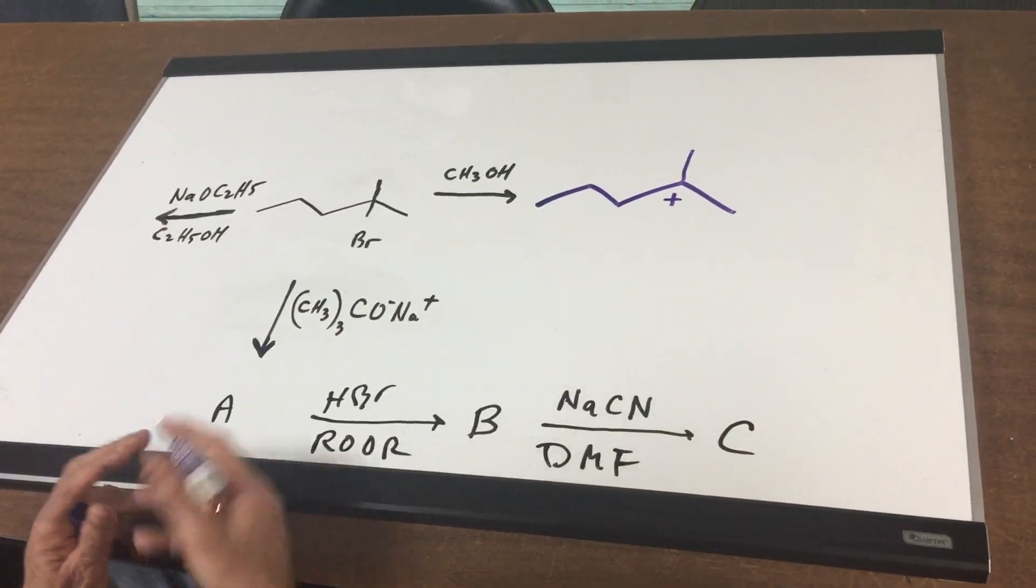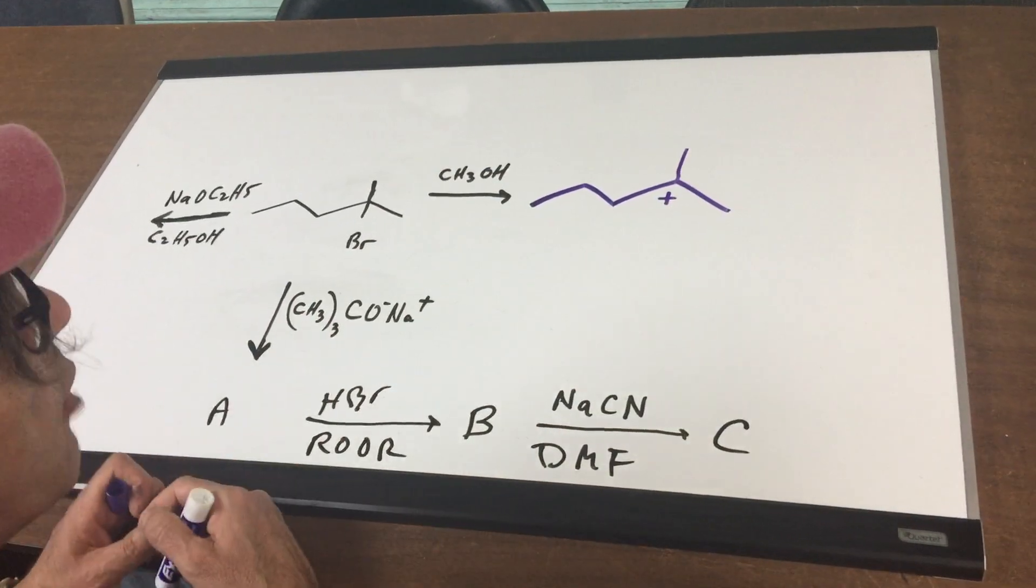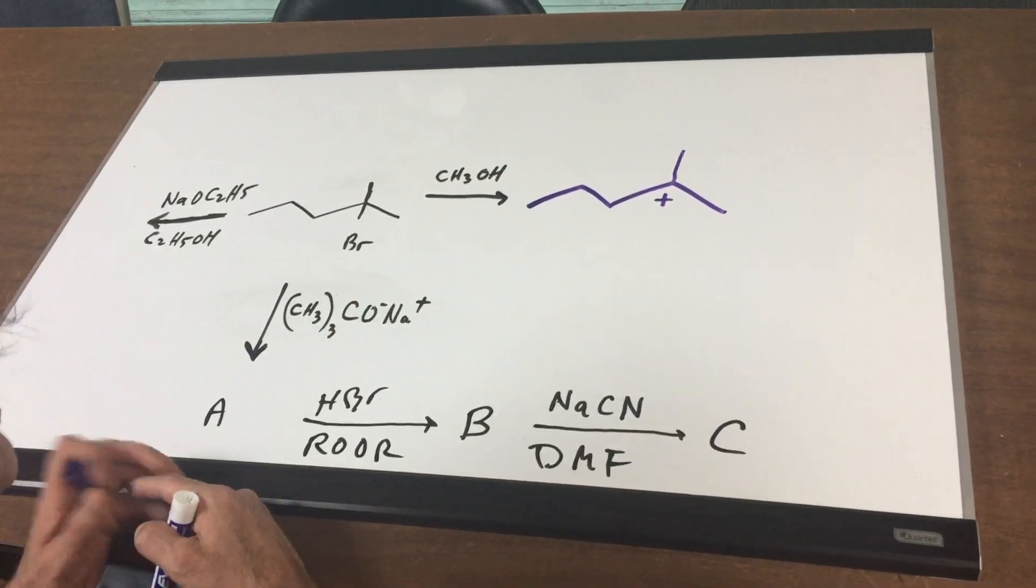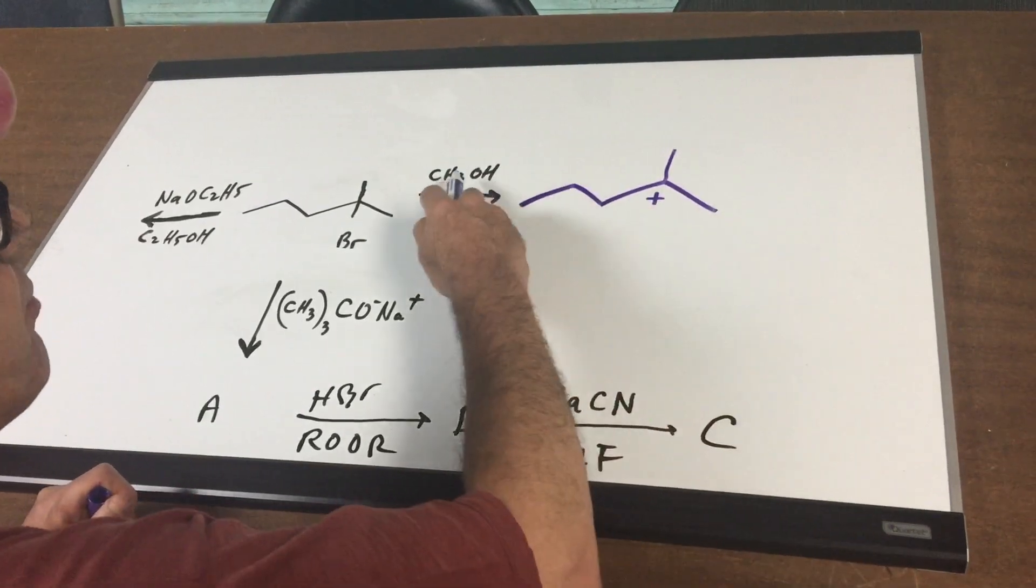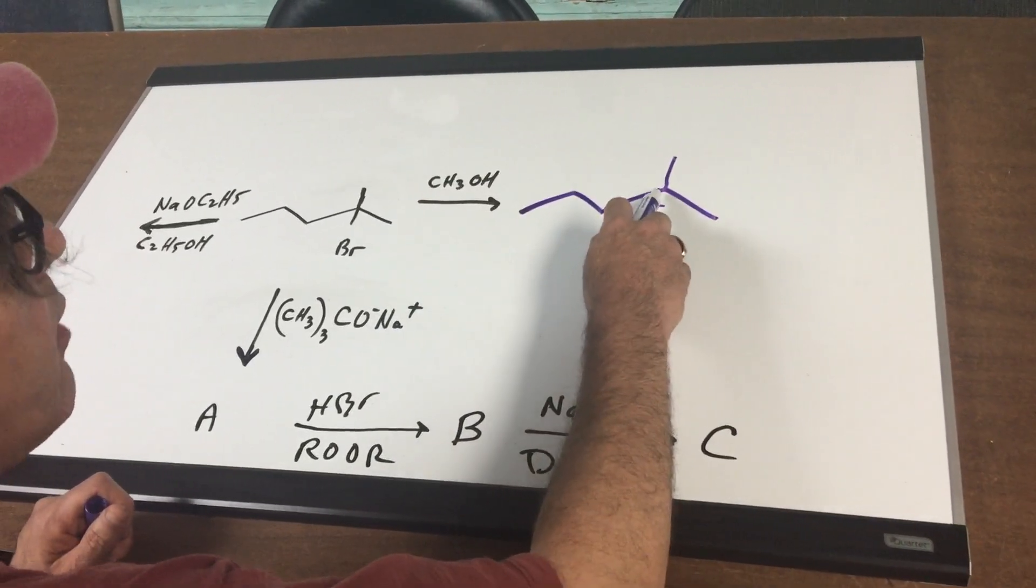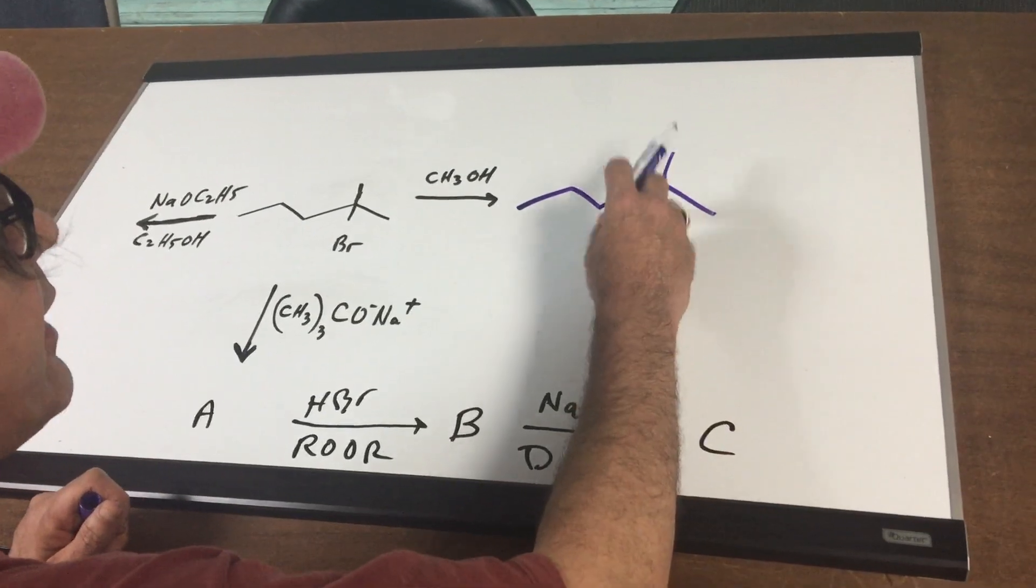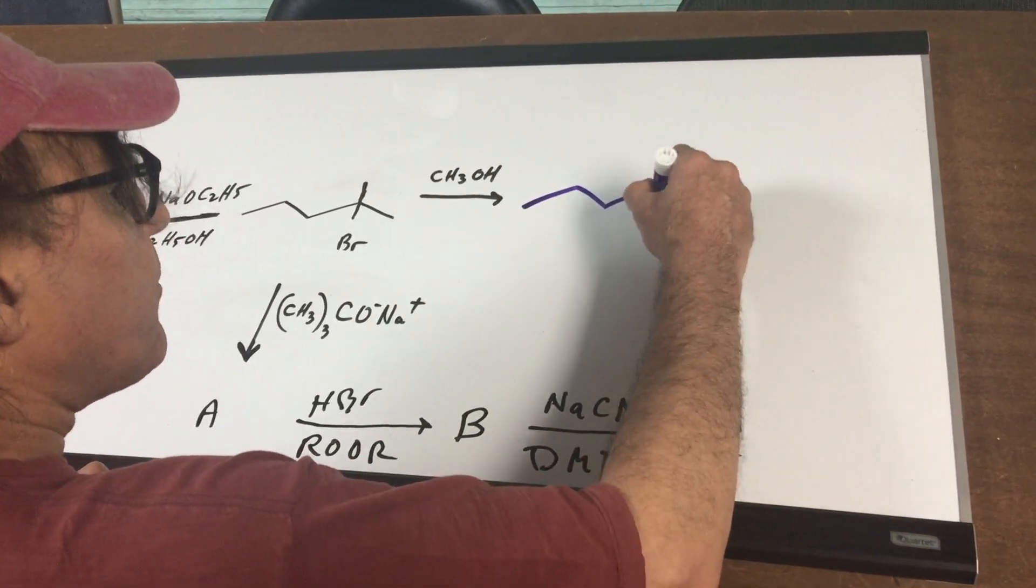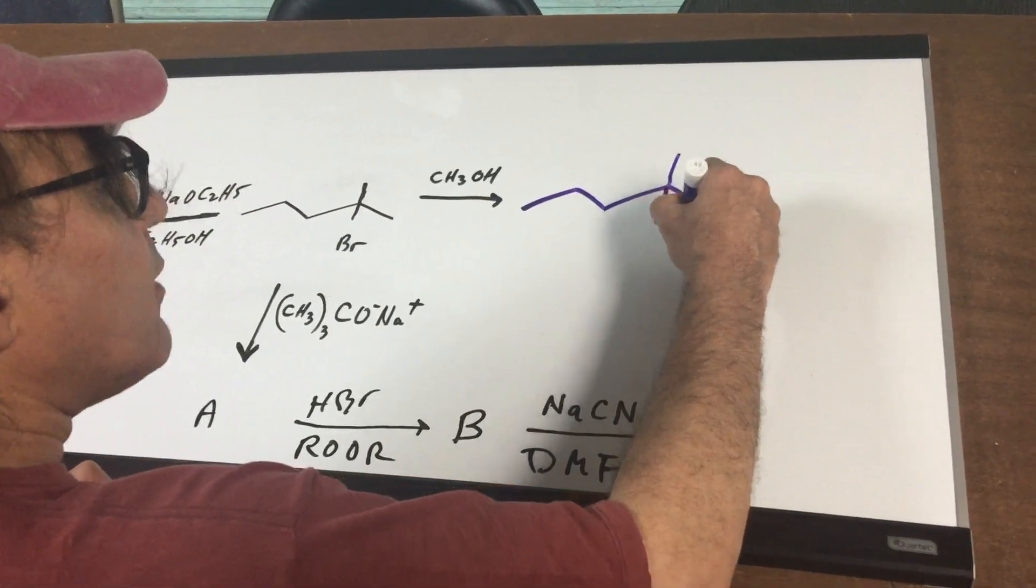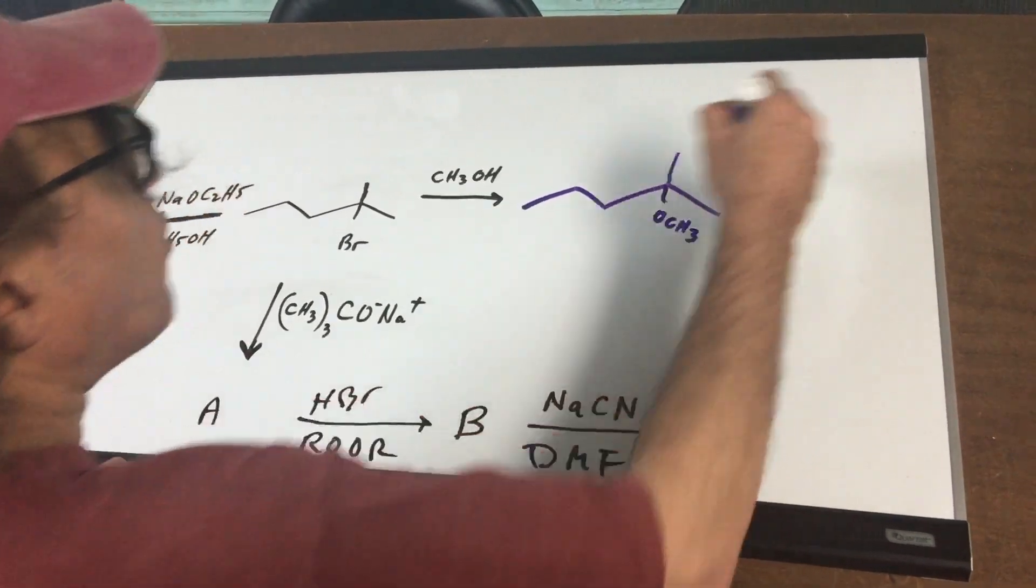Now if you form a carbocation ion, we get a tertiary so there's no shifting. That means there's two possibilities. The nucleophile, the CH3OH could attack here, deprotonate it and give you the OCH3 group right here. So that's one product and that would be the SN1 mechanism.